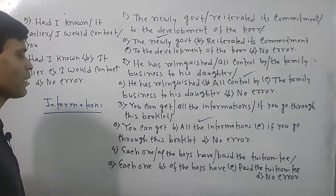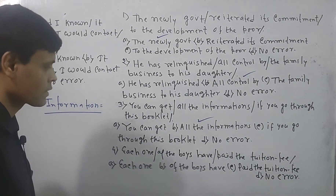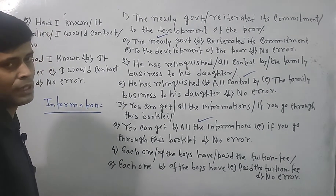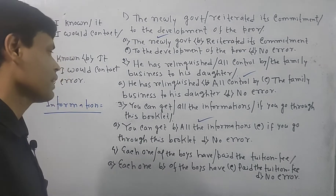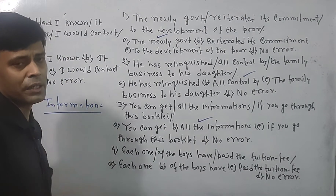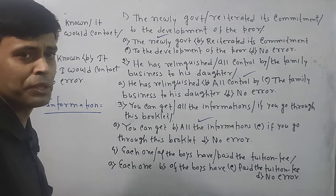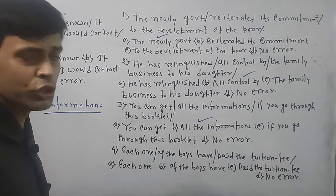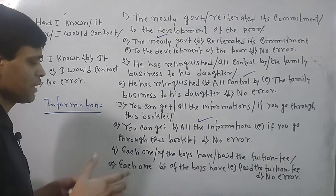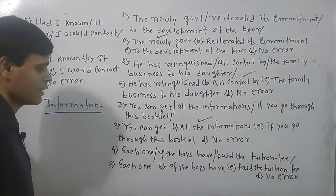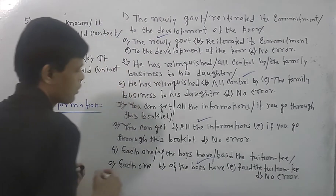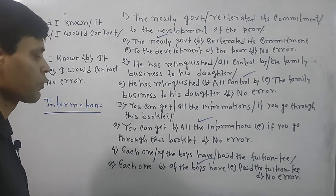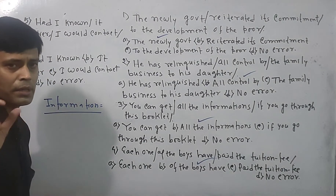Next question: 'Each one of the boys have paid the tuition fee.' Look at the options: 'each one of the boys,' 'have paid,' 'the tuition fee,' or 'no error.' Whenever you use a pronoun like 'each,' the verb must be singular in form. But here, instead of a singular verb, we have written 'have.' 'Have' is used when the subject is plural, but here the subject is singular. So instead of 'have,' 'has' should be used. The mistake lies in option B — 'have' should be replaced with 'has.'